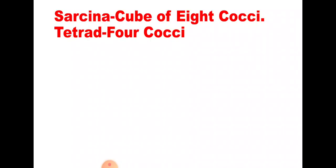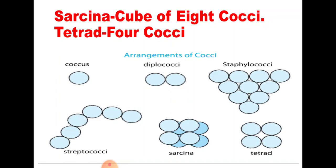Another type is sarsina, which means a cube of eight — eight cocci joined together. The last cocci type is tetrad, meaning four cocci joined together. Here is an image of the different cocci bacteria arrangements: cocci means single berry-like, diplococci means double berry-like, strepto means chain-like, staphylo means cluster like grapes, sarsina means cube of eight, and tetrad means four berry-like bacteria.